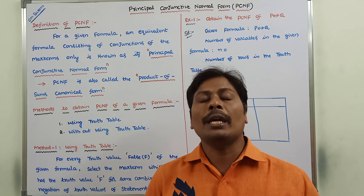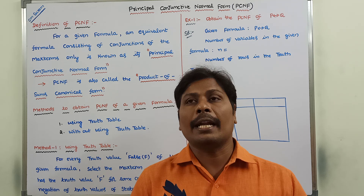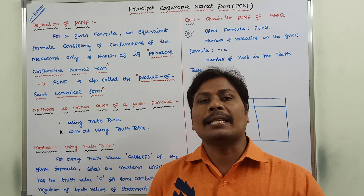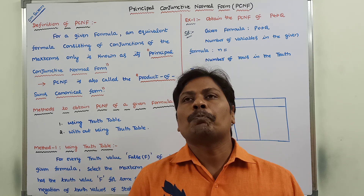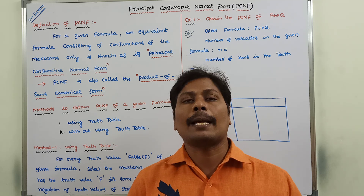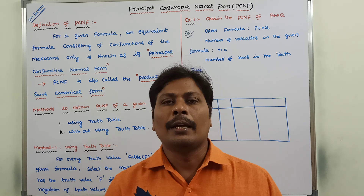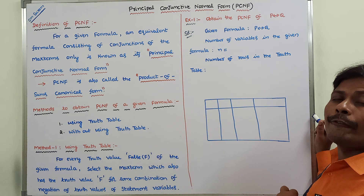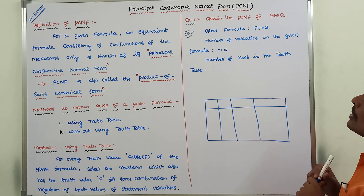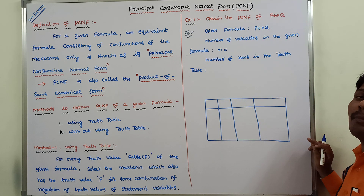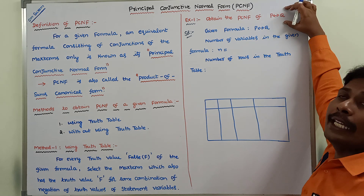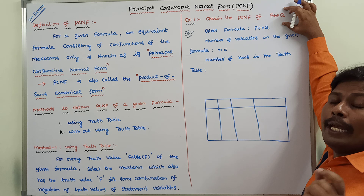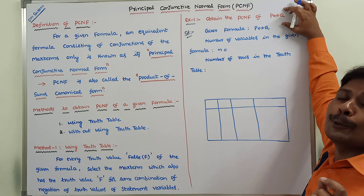Now, in this video, we have to discuss about what is PCNF, what are the methods we have to use for getting the equivalent PCNF for a given formula, and what are the steps we have to follow, with some example problems. First I am explaining one example problem, after that we go for the definition of PCNF. So first: obtain the PCNF of P biconditional Q. This is the given formula. For the given formula, we have to find out the equivalent formula in PCNF by using the truth table method.